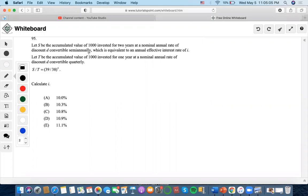This problem says S is the accumulated value of $1000 invested for two years, discounted semi-annually. So we'll make the exponent negative four. For S, the value T is $1000.